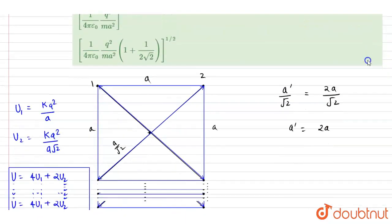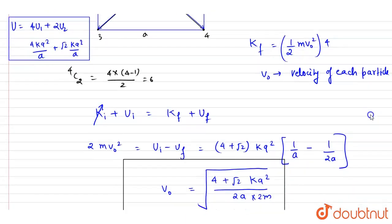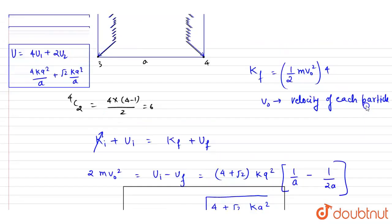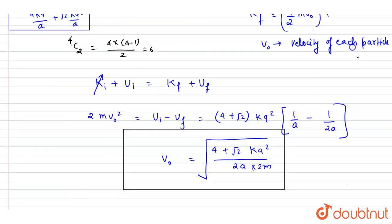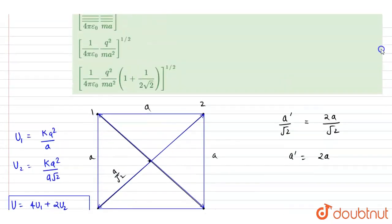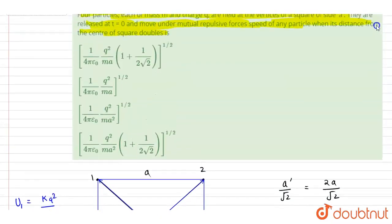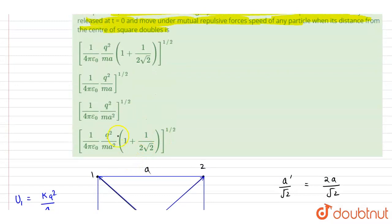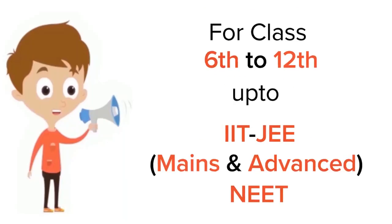You can divide through by 4 to simplify: the factor becomes (1 + 1/(2√2)). Checking against the answer options, the denominator contains ma, not ma². So option A is the correct answer.